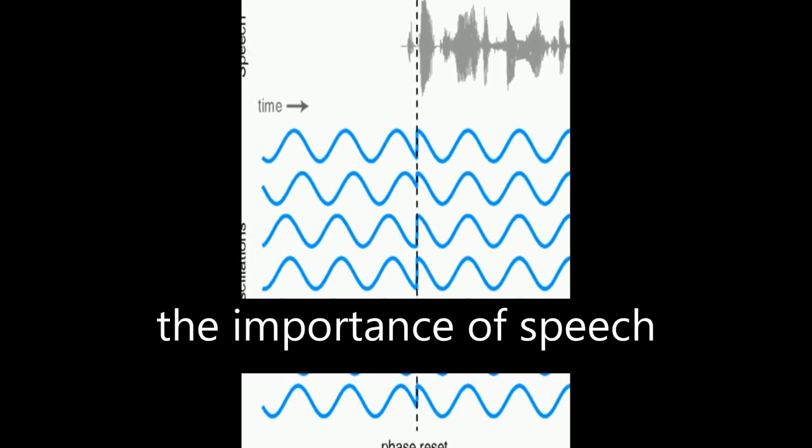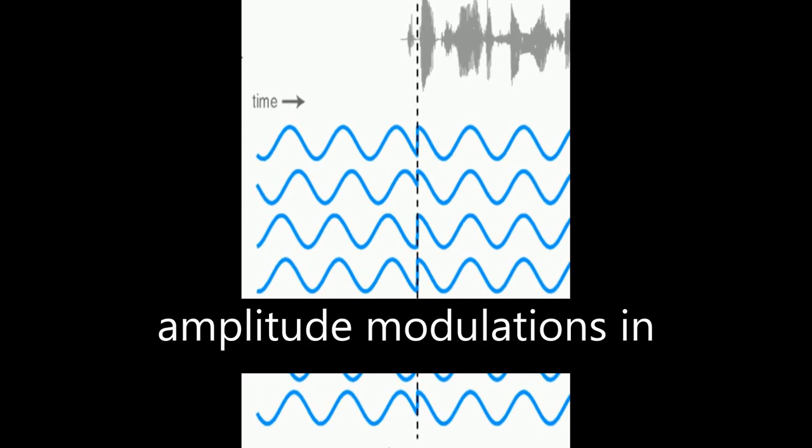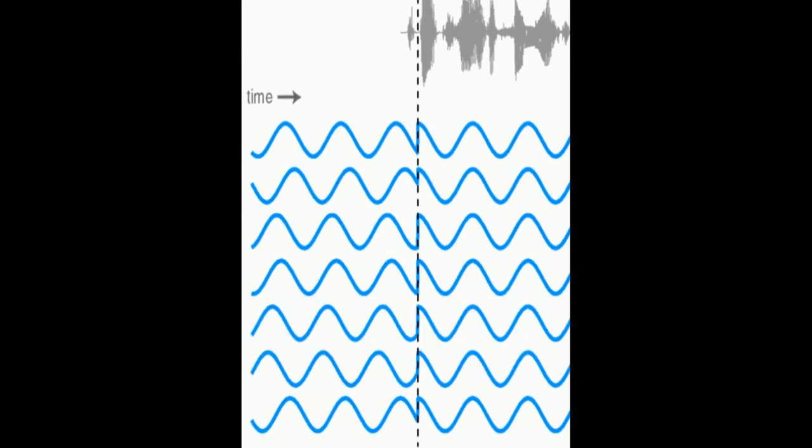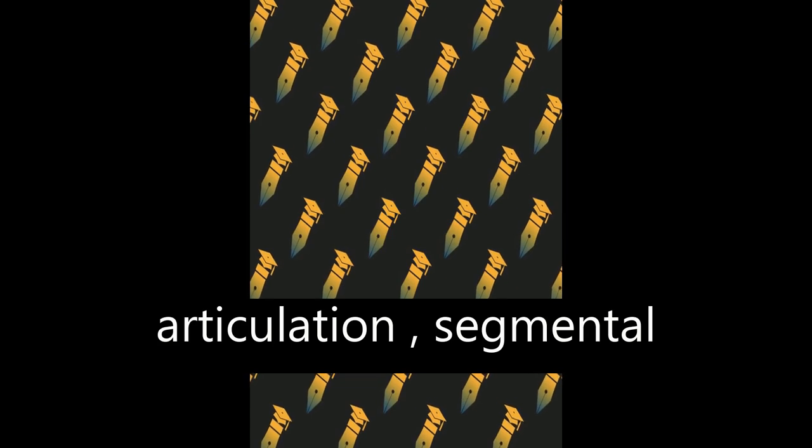The article discusses the importance of speech rhythm and how it is conveyed through amplitude modulations in speech. These modulations contain important markers for place and manner of articulation, segmental information, and speech rate.